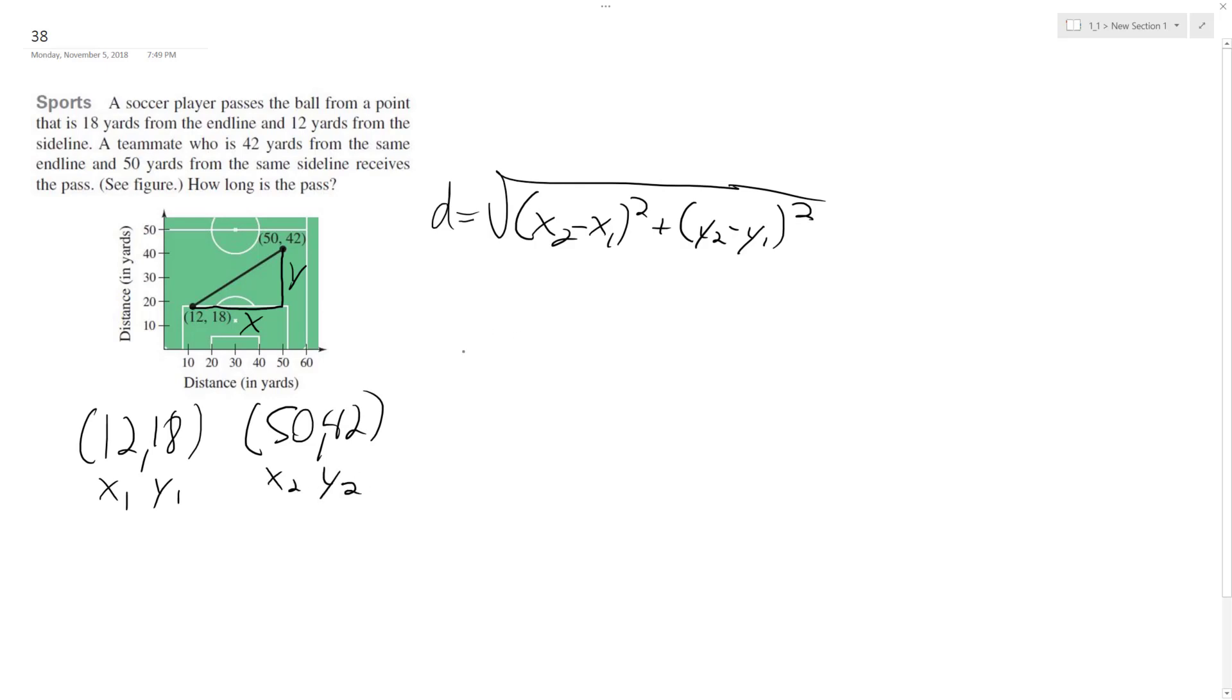Distance is equal to the square root of x2, so 50 minus 12 squared plus, for y, 42 minus 18 squared.